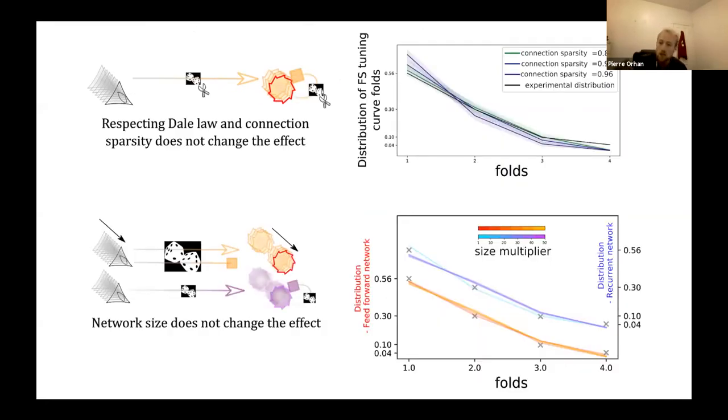Next, if we try to make the network a bit more like real neurons, say we force excitatory connections to be excitatory, and we force inhibitory connections to be inhibitory, and we add also sparsity to the connectivity, then we observe that the fold distribution still appears. If we change the size of the layers, we increase the number of neurons as inputs and outputs, we observe that the folds are still learned.